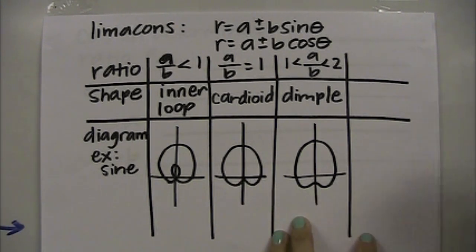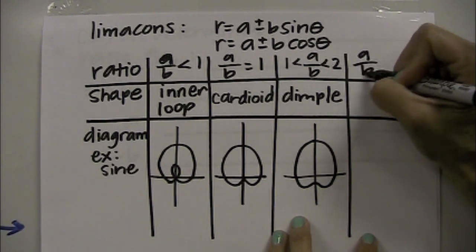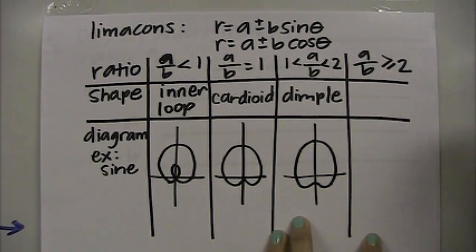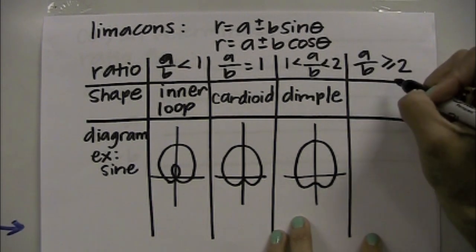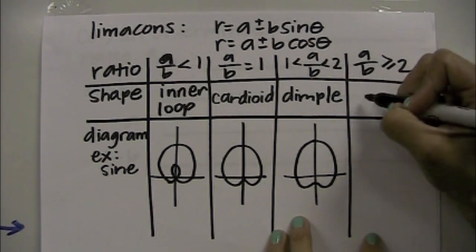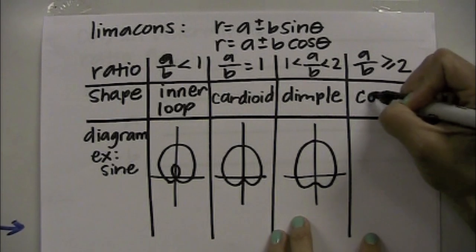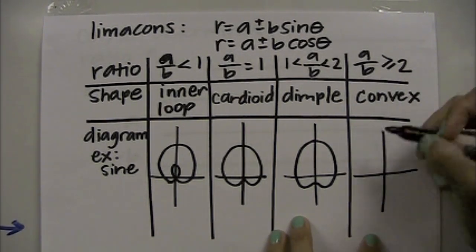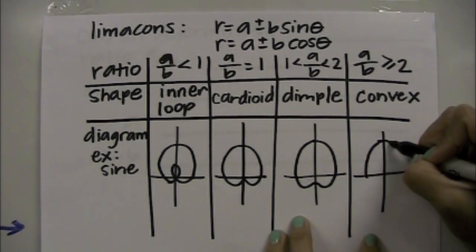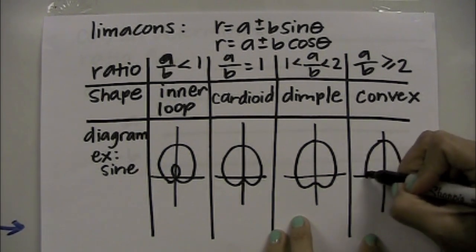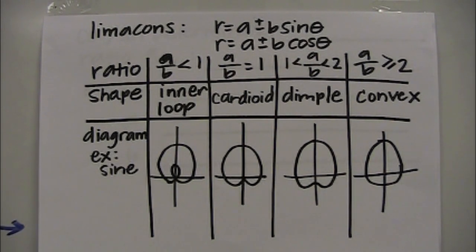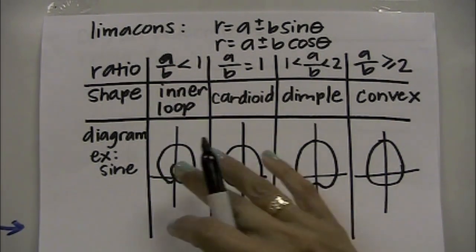Last scenario is when a over b is greater or equal to 2. If that's the case, then you don't have a dimple, you don't have an inner loop. And I've seen some textbooks refer to it as convex. So it still kind of looks similar on the top half of the x-axis. It just kind of rounds out. So there's your four scenarios, always checking your ratio of a over b first.